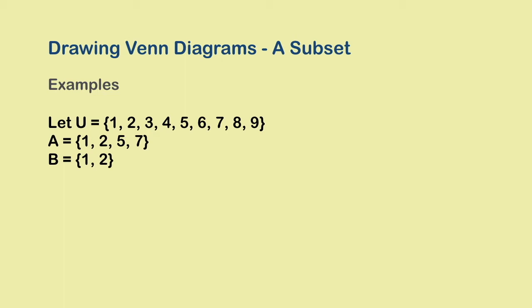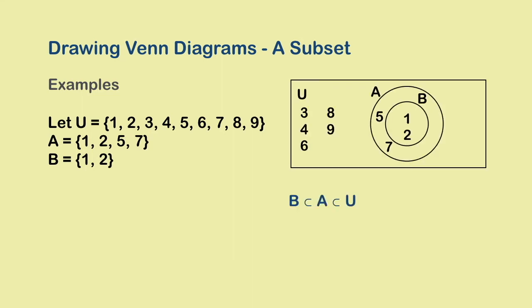So in the Venn diagram, the entire circular region of B will be inside the circle of set A. Here is the Venn diagram.